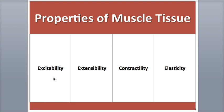The first property, electrical excitability, is shared by both muscle and nervous tissue, and is the ability of the tissue to respond to stimuli and generate electrical signals called impulses, also known as action potentials. In muscle fibers, we call these impulses muscle action potentials. There are two main types of stimuli that can generate muscle action potentials: specialized autorhythmic muscle fibers like the pacemaker in cardiac muscle tissue, which can produce their own electrical signals, and chemical stimuli like neurotransmitters, hormones, and ions.